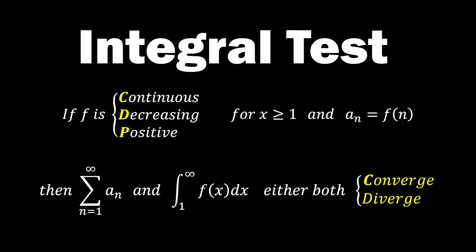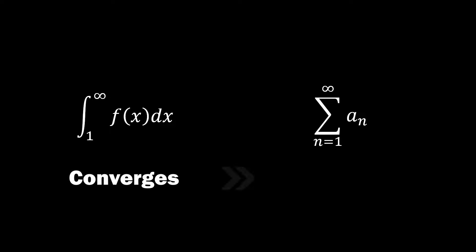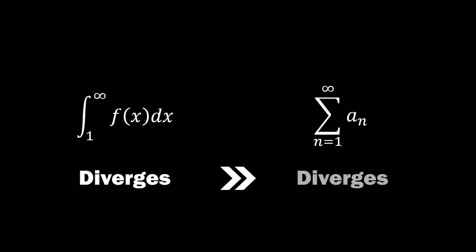Seems a bit complicated, doesn't it? Let me simplify and get straight to the point. If the integral of f of x from 1 to infinity converges, then the infinite series a sub n also converges. On the other hand, if the integral of f of x diverges, then the infinite series a sub n will also diverge.